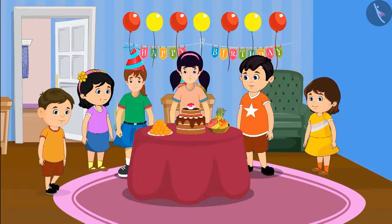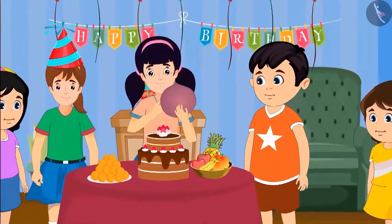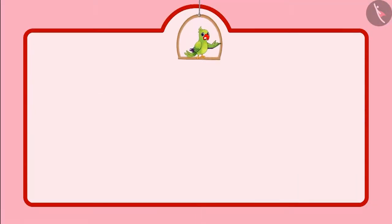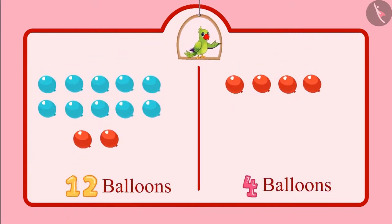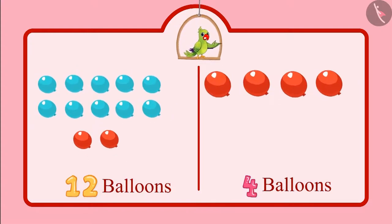Today is Aarti's birthday, and her friends are all busy preparing for her party. Neha is blowing balloons for the party. Neha blew 12 balloons and Chotu blew four balloons. Can you tell me how many total balloons did Chotu and Neha blow together? Let us see — first of all, Neha blew 12 balloons and Chotu blew four balloons.